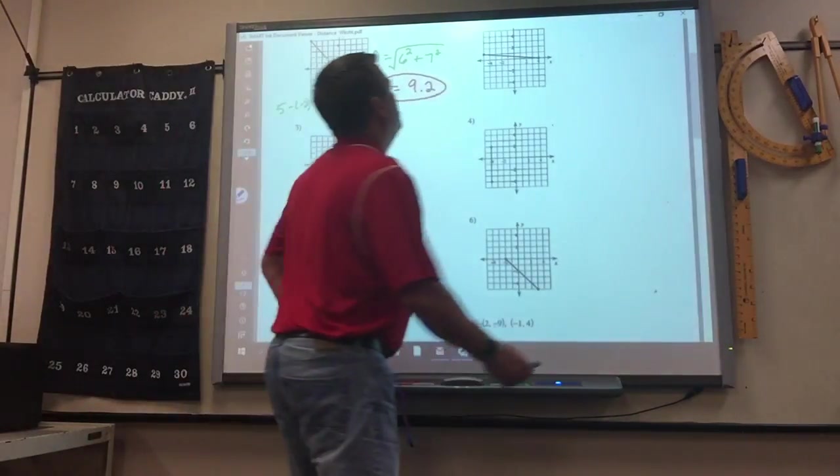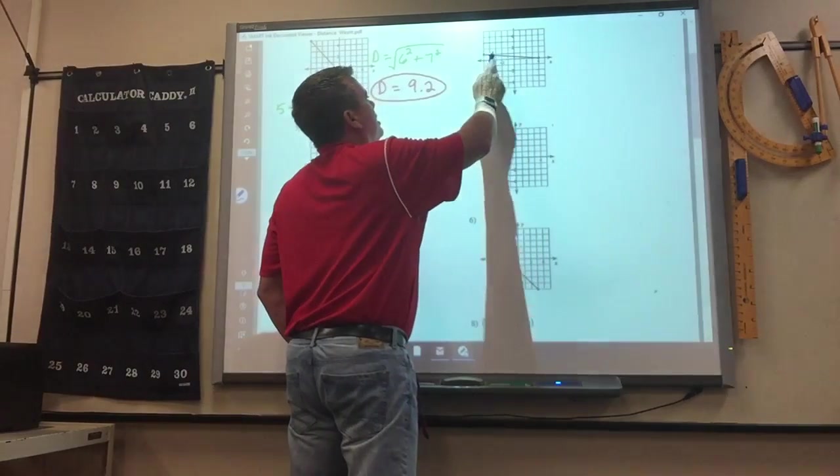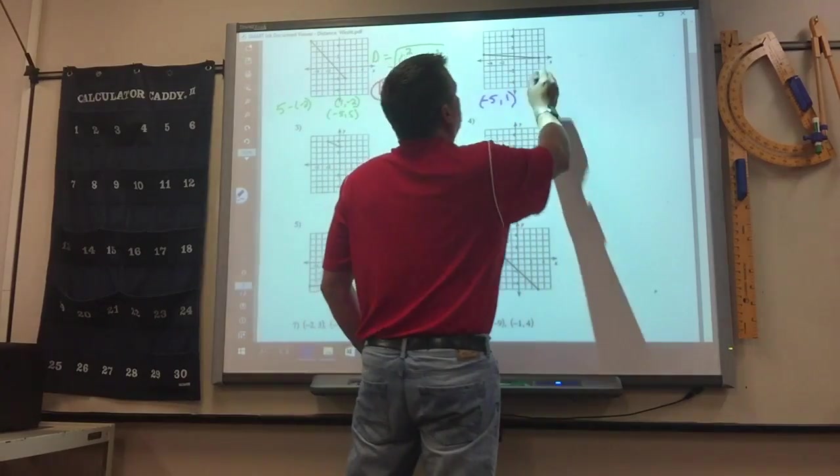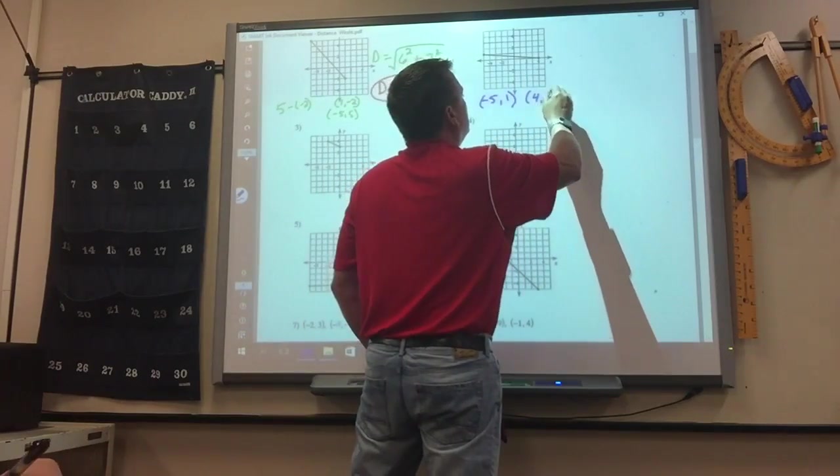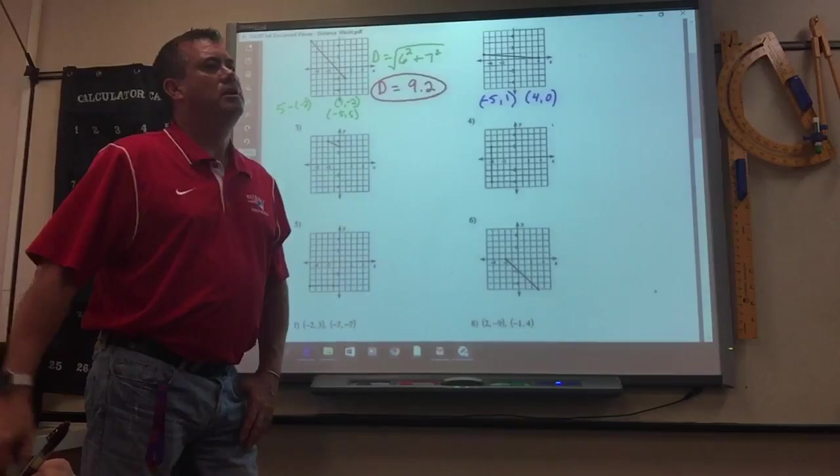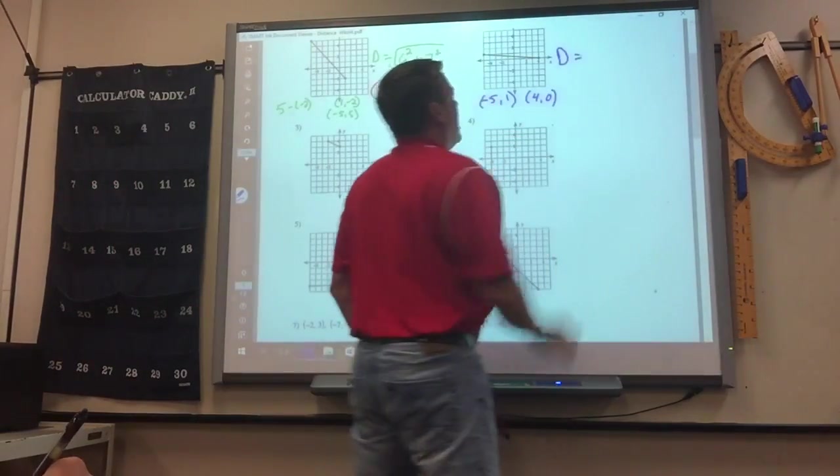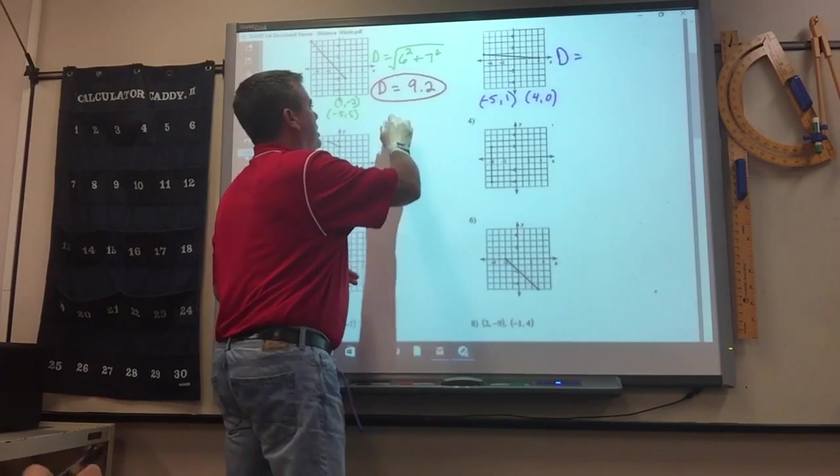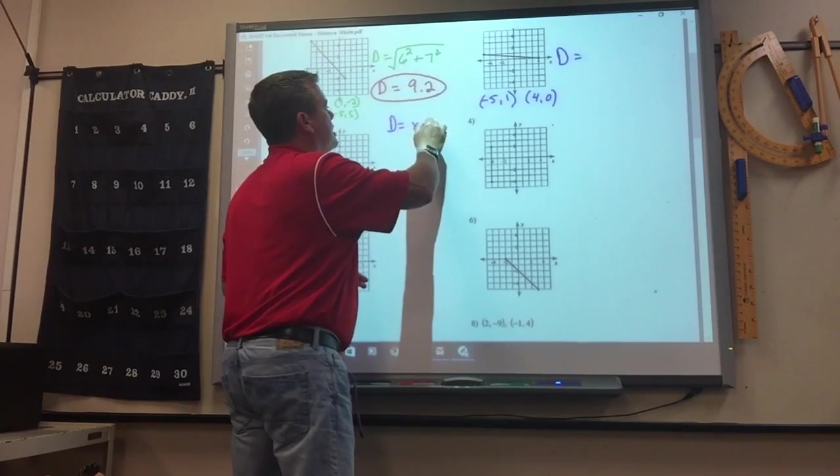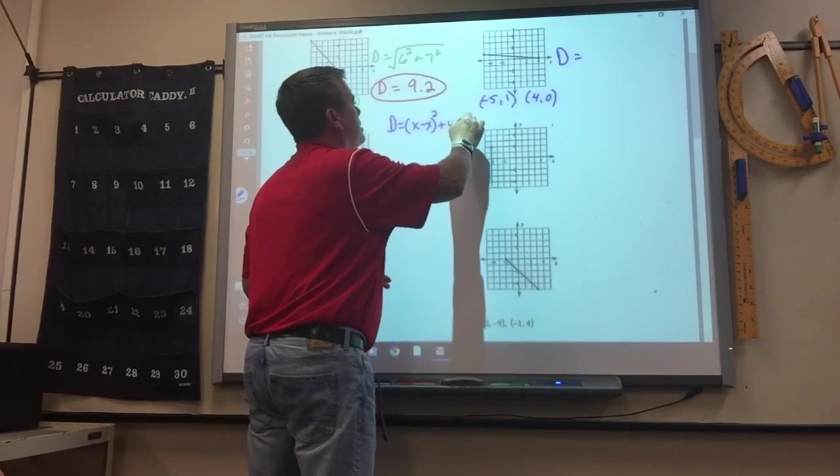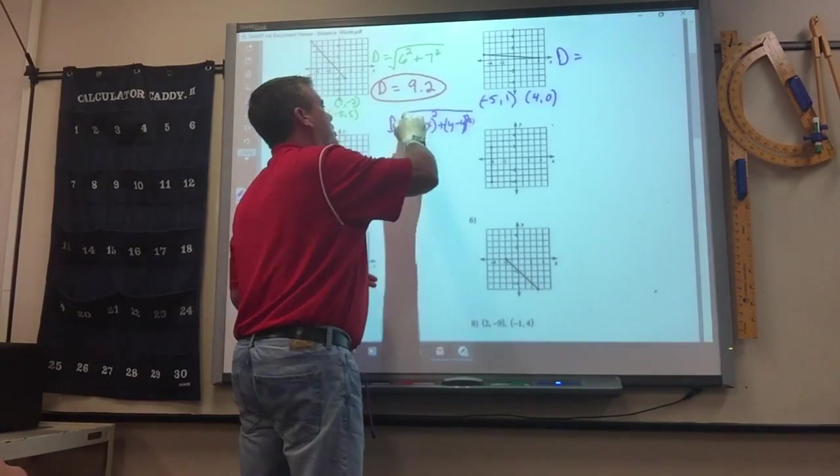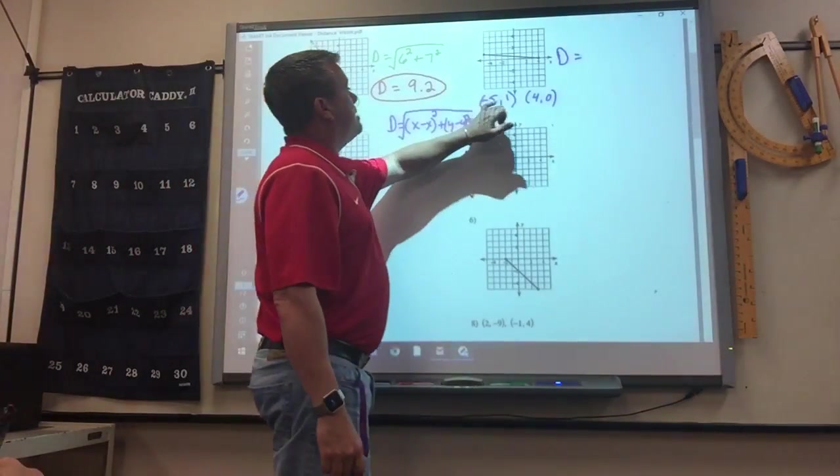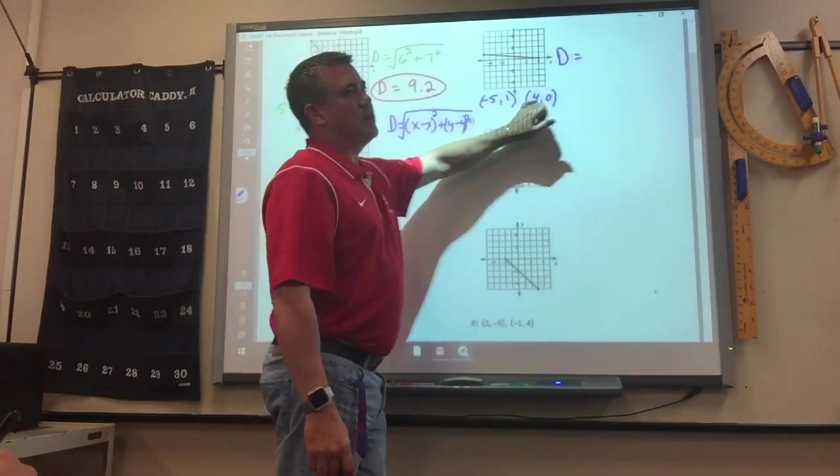Number 2, this is left 5 and up 1, so negative 5, 1. This one is over 4, up 0. So the x minus x, you may want to write this formula down so you got it. x minus x squared plus y minus y squared, and then square root. So the x take away the x, it doesn't matter which way I do it.